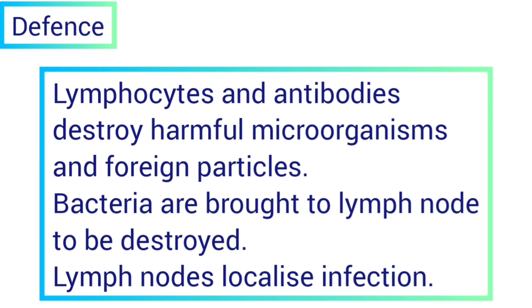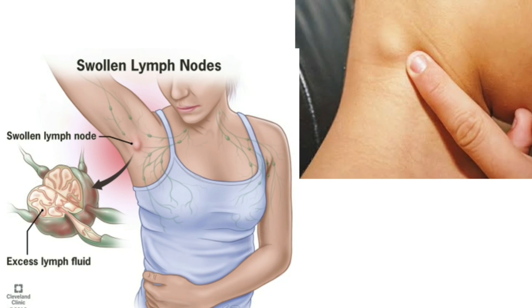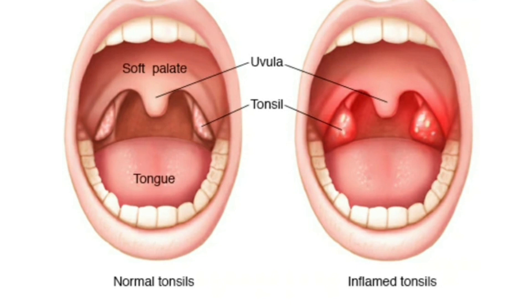Another function of lymph is defense. As lymph carries lymphocytes and antibodies, it destroys harmful microorganisms and foreign particles, and this happens in the lymph nodes. Lymph picks up bacteria entering the body and brings them to the lymph nodes, where they are destroyed. Lymph nodes also help in localizing the infection and preventing it from spreading to other tissues — meaning the infection remains only in the lymph nodes. That is why sometimes when a person has an infection, we can see the lymph nodes swelling. For example, when we have a throat infection, we can see that our tonsils are swollen and painful. Tonsils are two lymph nodes located on either side of the back of the throat, and they help in preventing the body from infections.